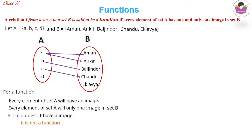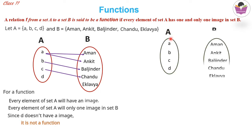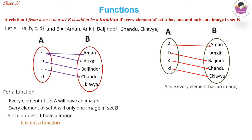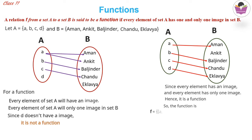Now let's check how a relation becomes a function. Here a is related to Aman, b to Baljinder, c to Chandu, and d to Egalavia. Every element of set A has an image, and every element has only one image, so both conditions are satisfied — hence it is a function.